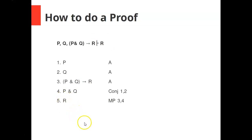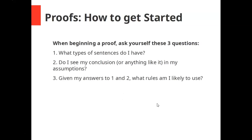Let's slow down and go step by step. When you start a proof, you should ask yourself three questions: First, what types of sentences do I have? Second, do I see my conclusion or anything like it in my assumptions? Third, given my answers to the first two, what rules am I likely to use? These are good questions to begin a proof with, especially if you're not sure how to get started.